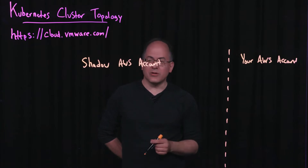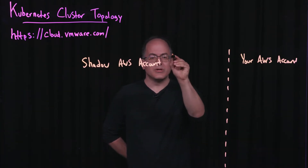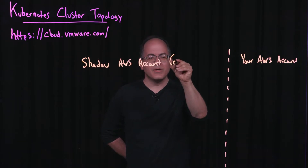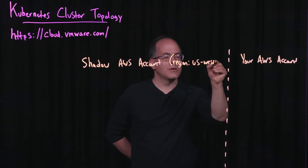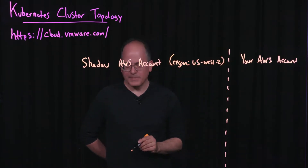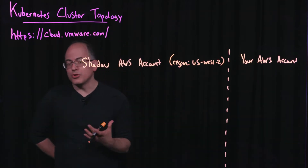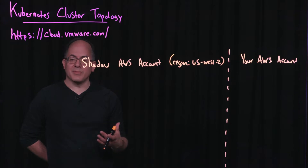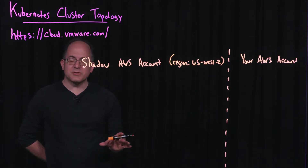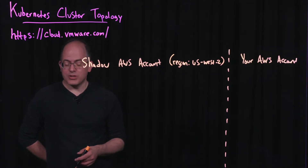I'll show you how we create a single cluster, and we're going to put it in one region. A cluster is always in a single region — we'll put it in the US West 2 region. Every time we create a cluster, there are two different types: the first is called a production cluster, and the second is called the development cluster. Today I'm going to focus on production clusters. They are more scalable, more robust, and more likely to be used for production workloads.